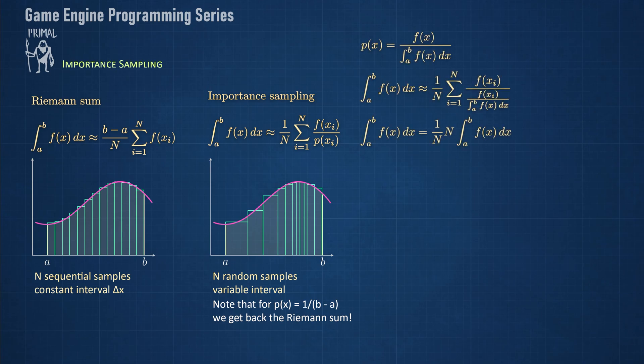We can see that if we take the function itself and divide it by the integral and use that as P of X, we get the exact result. This means that whatever we choose for P of X, it'll give us better results if it resembles F of X.